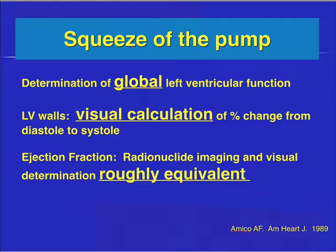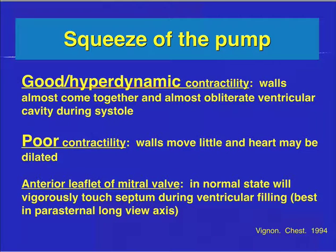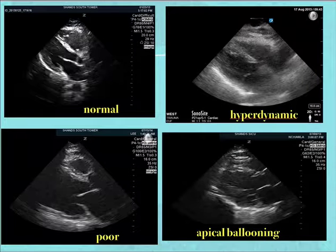This actually makes your assessment easier. With good and hyperdynamic contractility, the walls come almost all the way together and nearly obliterate the ventricular cavity during systole. With poor contractility, the walls move little and the heart may be dilated. The anterior leaflet of the mitral valve in the parasternal long view can also be assessed — in a normal state, it should be touching the septum during ventricular filling.